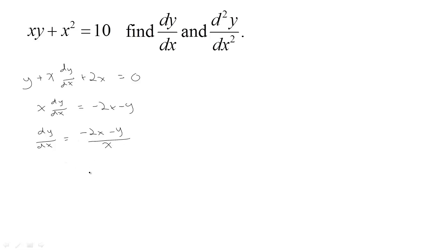Now that we have our first derivative, we can find the second derivative by taking the derivative of both sides with respect to x again. Taking the derivative of dy/dx with respect to x gives the second derivative of y with respect to x. Over on the right side we can use the quotient rule, which says you take the derivative of the top times the bottom minus the top times the derivative of the bottom.